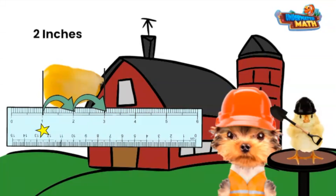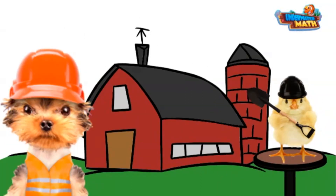That is right. When reading measurements, first look to see where the item begins. If it doesn't start at zero, then you will need to find the difference between the beginning of the item and the end of the item. Wow, there is a lot to remember about measuring. Let's go to the lake and measure some more things. Sounds fun!